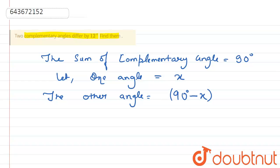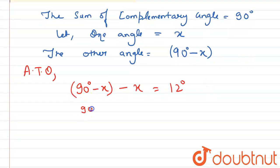So here according to the question, 90 degrees minus x minus x is equal to 12 degrees, so 90 minus 2x is equal to 12 degrees, therefore 2x is equal to 90 minus 12 degrees.